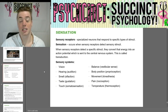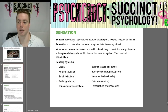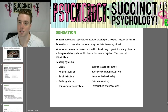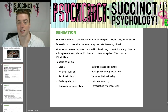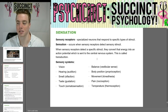So what makes up sensation? First off, we have sensory receptors, which are specialized neurons that respond to specific types of stimuli. Sensation occurs when the sensory receptors detect sensory stimuli. When sensory receptors detect the specific stimuli, they convert that energy into an action potential which is sent to the central nervous system. This is called transduction.